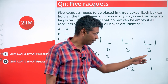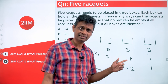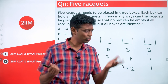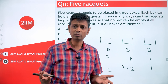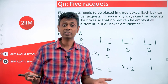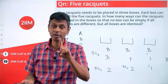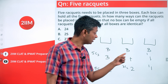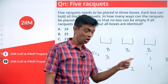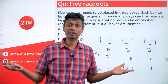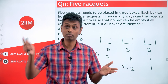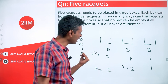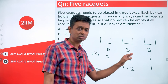The two remaining boxes with one racket each are identical. I have two rackets and I put one in each box. Whether I put A here and B there, or B here and A there, it's the same — because the boxes are identical. So it is not 5C3 × 3C2 × 2C1; it's just 5C3.